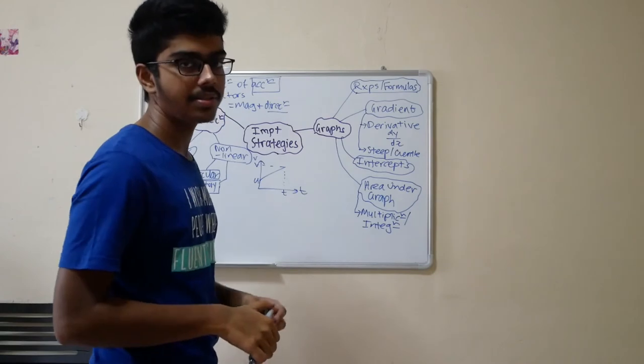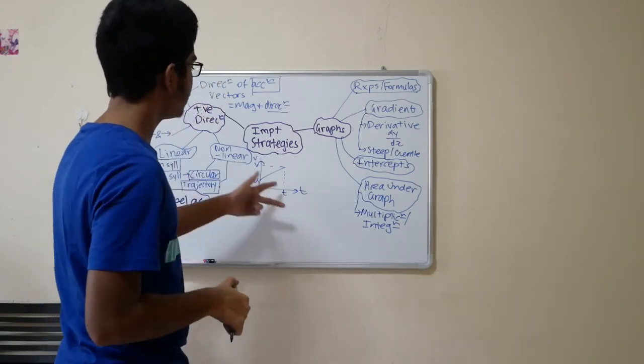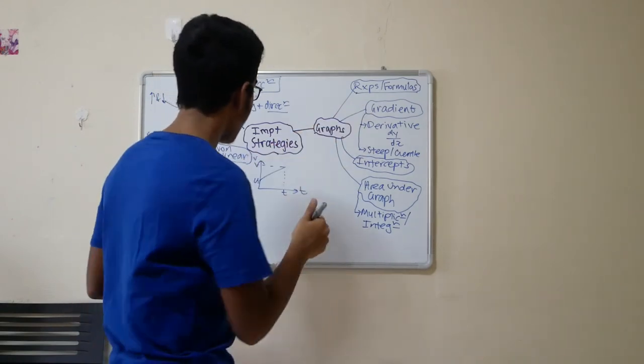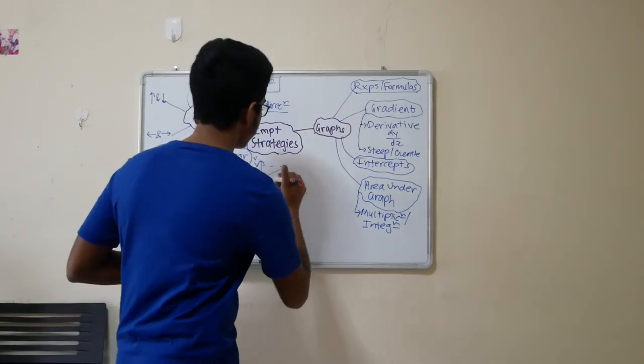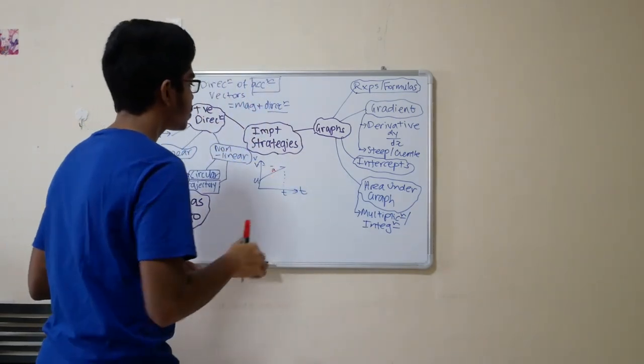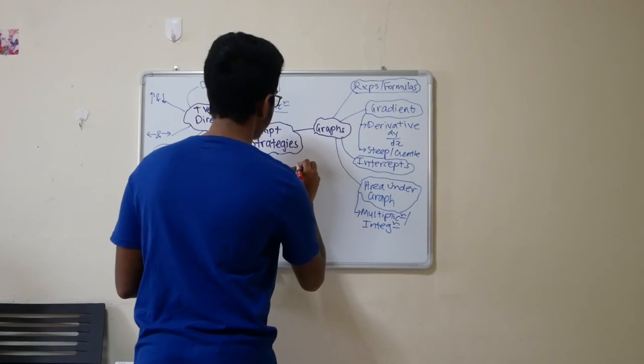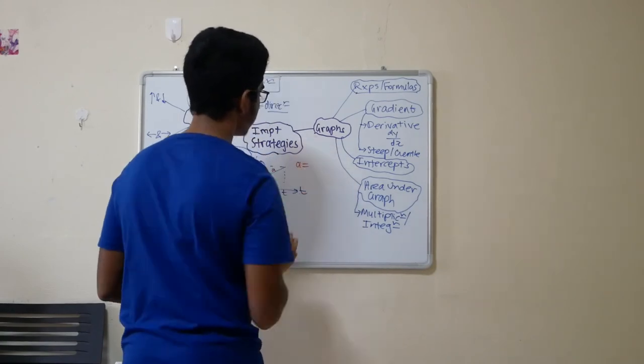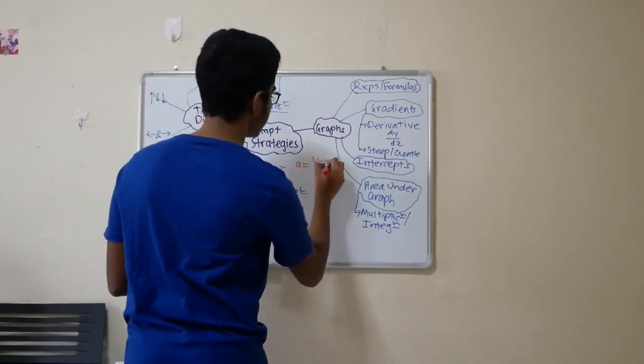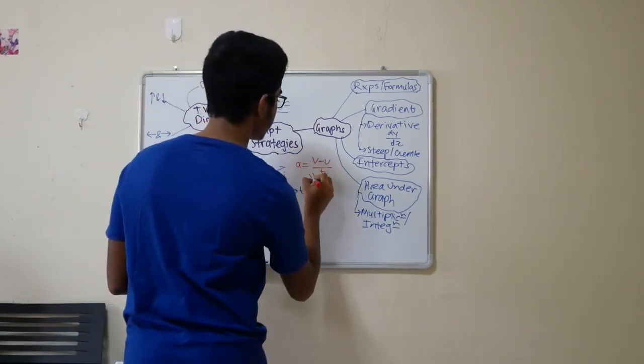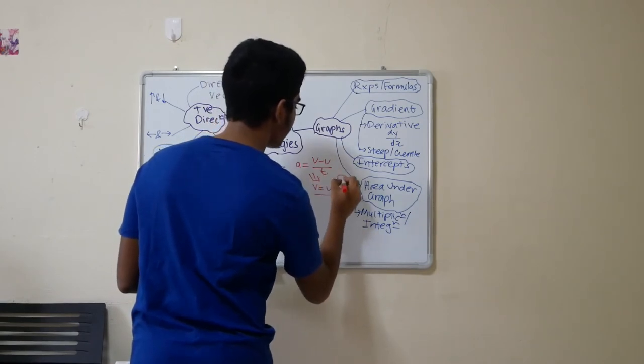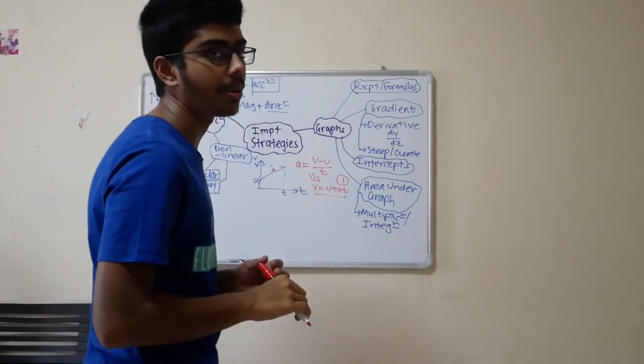Now, let's recall the concept of graphs that we learned earlier. What does the vt graph represent? The gradient of the graph will represent the acceleration. So, this thing right here is the acceleration, the gradient of the graph. So, if you apply this, you get a is equals to change in the rise over the run, which is v minus u over t. And this will give you v is equals to u plus at. This is the number one formula that you guys have to know in the topic of kinematics.